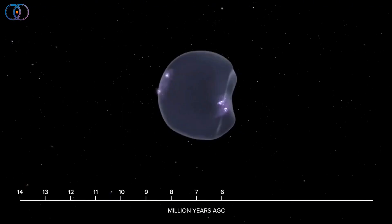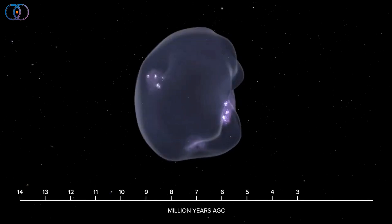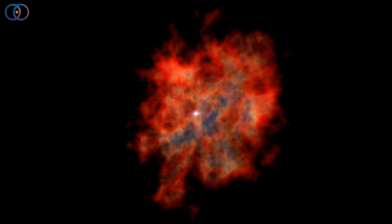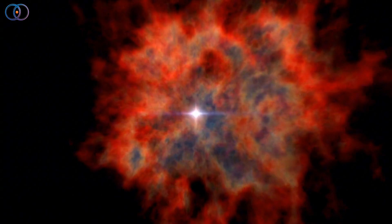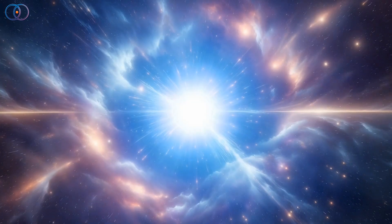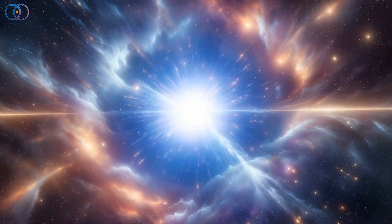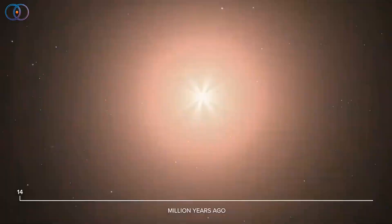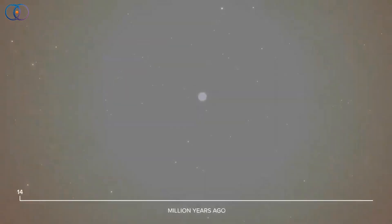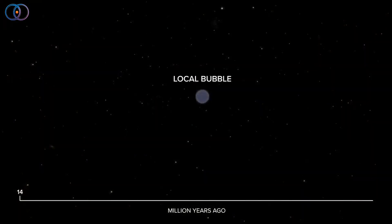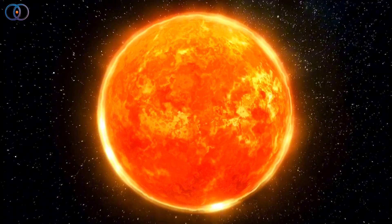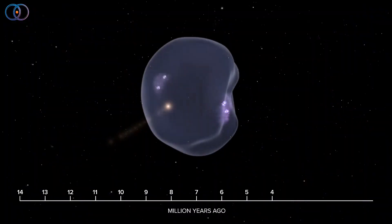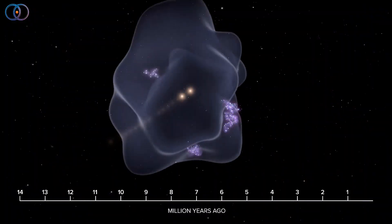Scientists believe this bubble was created about 14 million years ago, when several massive stars exploded as supernovas. These explosions were so powerful that they carved out huge cavities in the galaxy, pushing away gas and dust with shockwaves. Over time, the blasts merged together, forming the gigantic structure we now call the Local Hot Bubble. Our Sun wasn't born here, but it drifted into the bubble about 5 million years ago, and we've been traveling through it ever since.